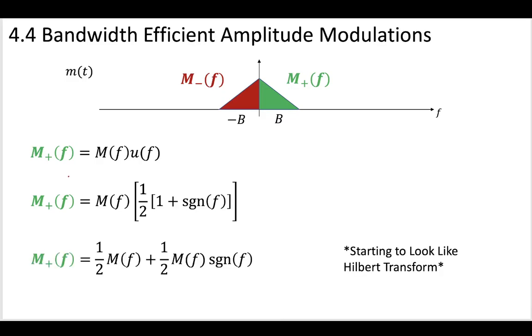Now you can see that if you write it this way, if we write M plus using the signum function, we can see that this is starting to look like a Hilbert transform. We're starting to see that if we have our original message and we put it through a Hilbert transform, the Hilbert transform will have this signum function in it, and we can use our original message plus the message that goes through the signum function, that goes through the Hilbert transform, and we'll be able to get just this single part of the sideband.